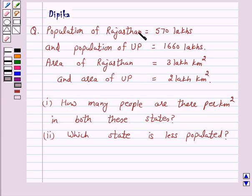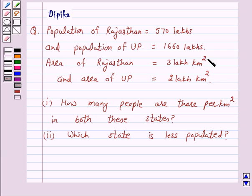Population of Rajasthan is equal to 570 lakhs and population of UP is equal to 1660 lakhs. Area of Rajasthan is equal to 3 lakh km² and area of UP is equal to 2 lakh km². Part 1: How many people are there per km² in both these states?